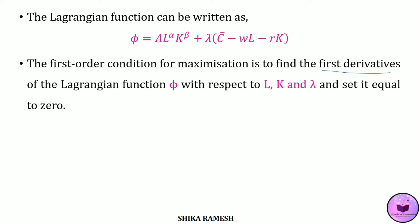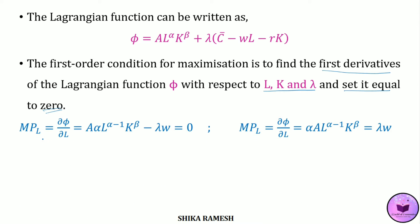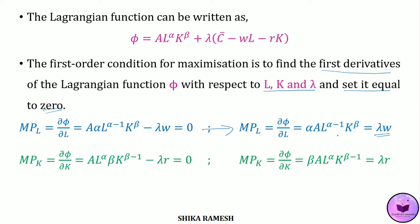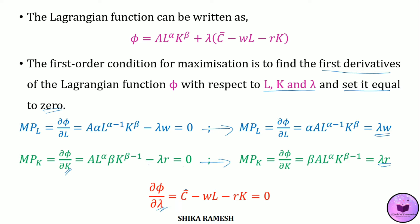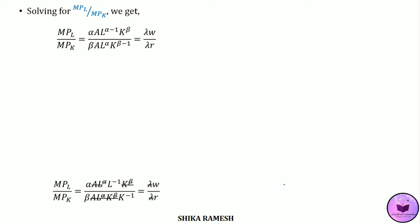We need to find the first-order derivatives of the Lagrangian function with respect to labor, capital, and λ, and set each equal to zero. We get: ∂φ/∂L = α·A·L^(α-1)·K^β - λw = 0, which simplifies to α·A·L^(α-1)·K^β = λw. Differentiating with respect to K gives: β·A·L^α·K^(β-1) = λr. Differentiating with respect to λ gives: C̄ - wL - rK = 0.